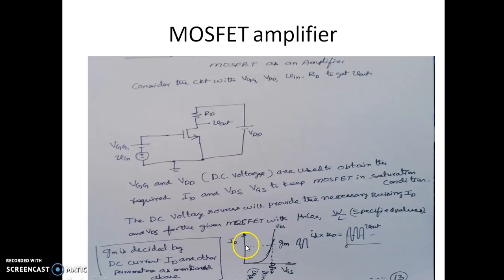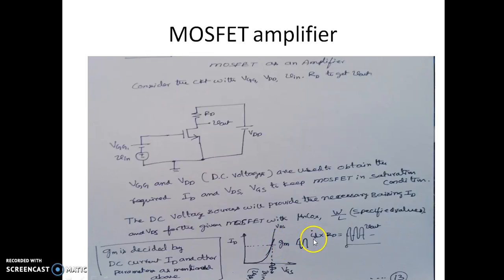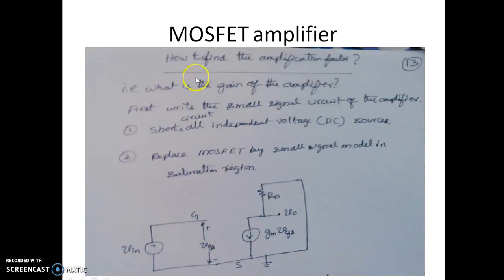For a given value of ID and VGS, we operate at a specific DC operating point. We apply a small AC signal which gets amplified, resulting in a small-signal drain current ID. This slope is given by GM. The input VIN is applied at the gate, and we get an output voltage shifted by a voltage represented by ID into RD.